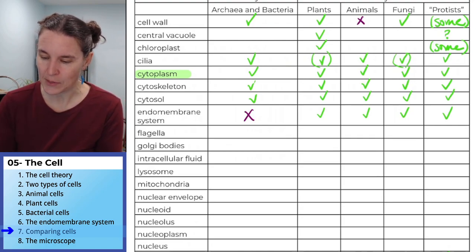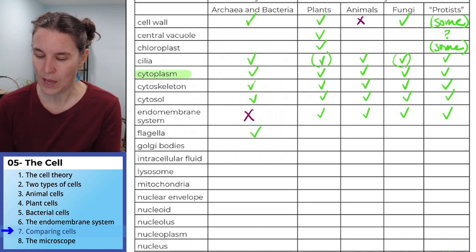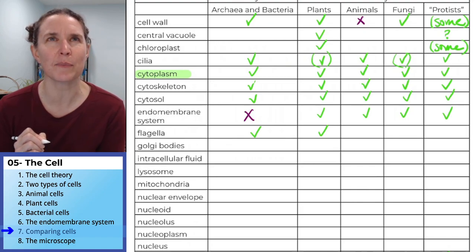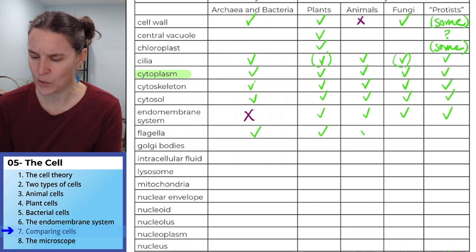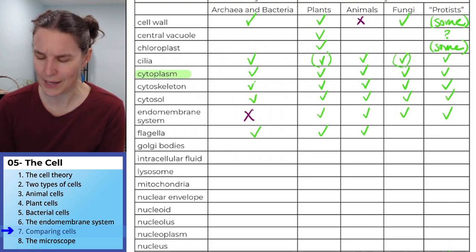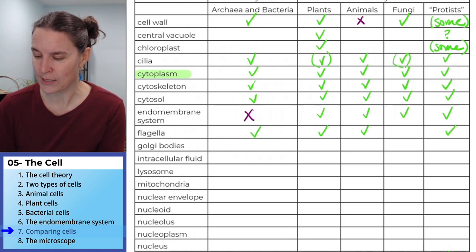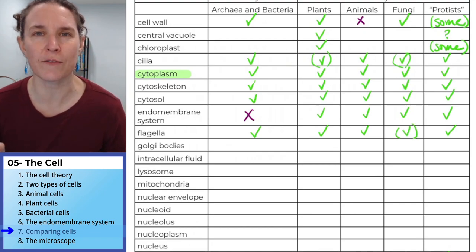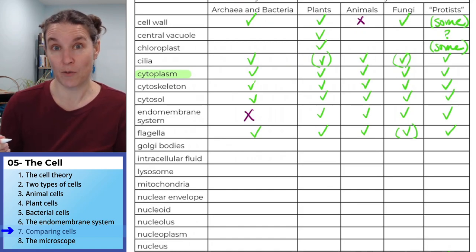Flagella — I'll do the same as I did with cilia. Prokaryotes definitely have them. I think plants have them — there are some motile plant cells, like plant sperm. Animal sperm for sure have flagella. Protists definitely have them. I'm putting parentheses around fungi because I can't visualize it right now, but I'm pretty sure everybody has flagella.